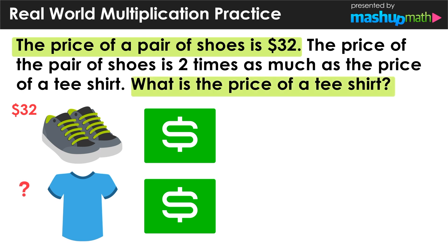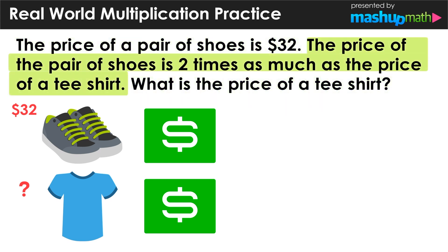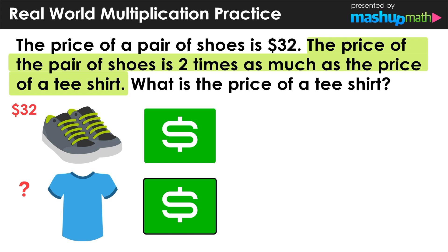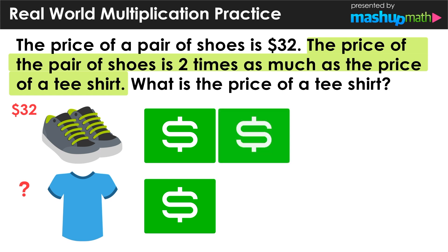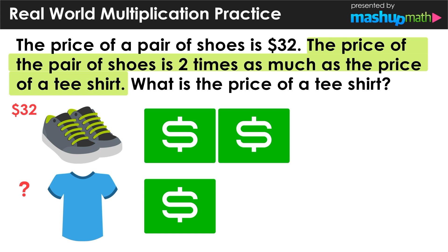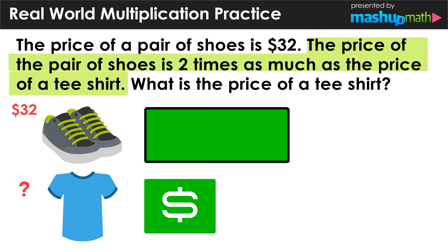Now, the middle sentence of this word problem says that the price of the pair of shoes is two times as much as the price of a t-shirt. So whatever that t-shirt costs — we still don't know what the value is — the shoes are going to cost twice that amount: two times, or double, all meaning the same thing. And again, we know that that price is $32.